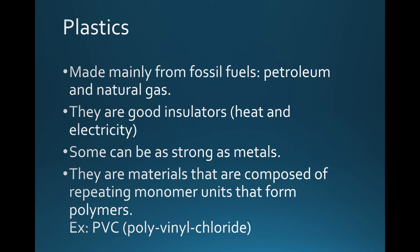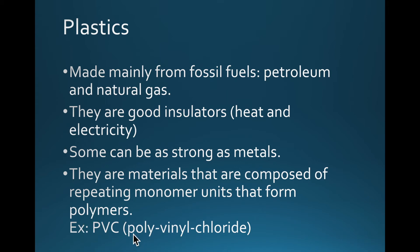Plastics are a very common material in our everyday lives. They're made mainly from fossil fuels — petroleum and natural gas are the main substances used. They're good insulators of heat and electricity and can be very strong, as strong as metals depending on the type. Plastics are composed of repeating monomers — think of Legos. A monomer is like a small unit, and putting many monomers together makes a polymer. An example is PVC — polyvinyl chloride — the pipes you find under a sink.